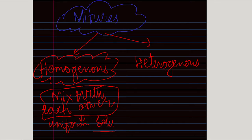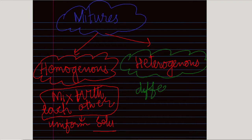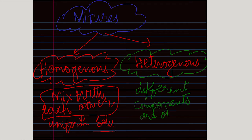A heterogeneous mixture is one in which the composition is not uniform throughout the liquid — different components are observed separately. For example, chalk in water is a heterogeneous mixture.